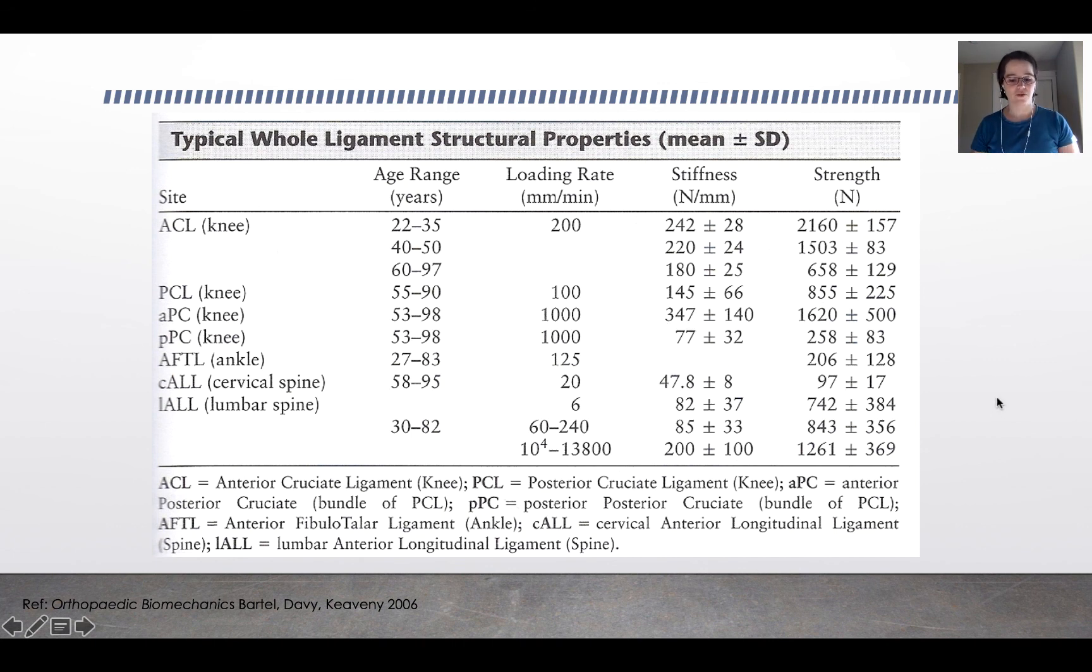The mechanical properties of tendon and ligament are very site dependent as well as very age dependent. And actually, you'll find that the cross-sectional area of your tendons and ligaments decreases with age as well. In the next video, we'll talk about tendon and ligament injury. I'll see you there.